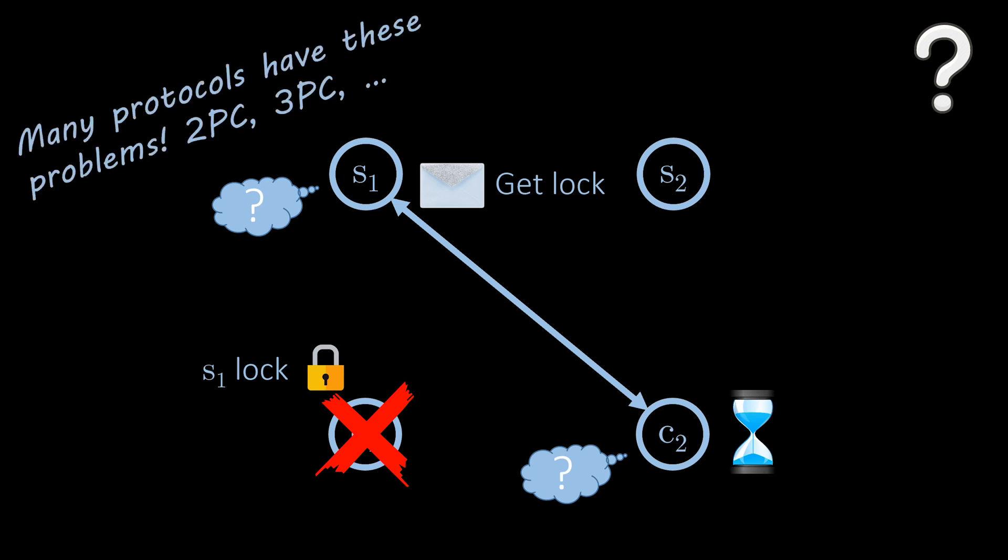There are many locking-based mechanisms such as two-phase commit and three-phase commit, often called 2PC and 3PC. These protocols have in common that they do not handle permanent failures well.